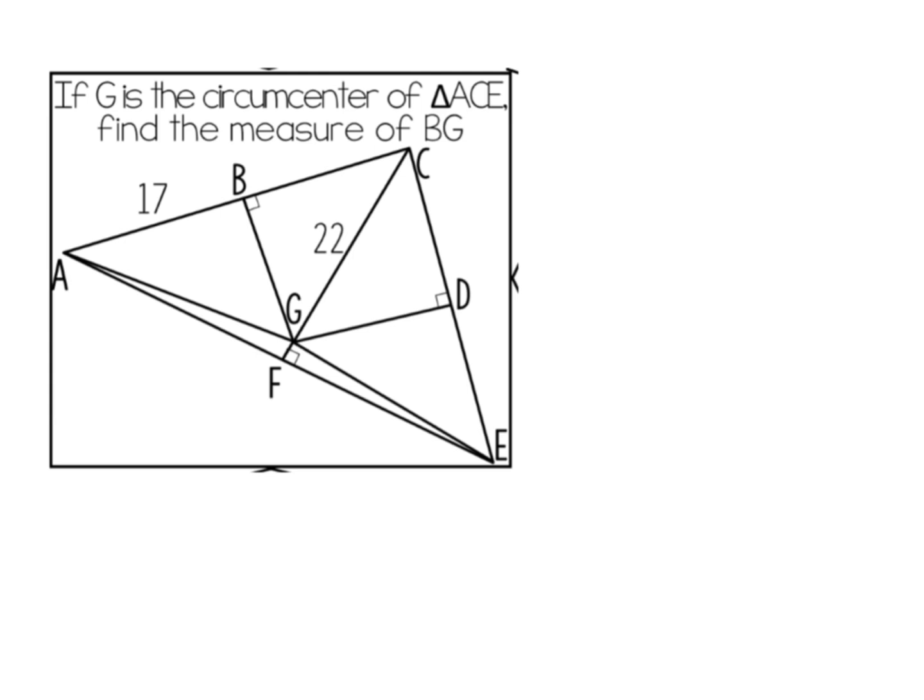Alright, so in this one here it says if G is the circumcenter. Okay, circumcenters - we have perpendicular bisectors and it's equidistant from the vertices. So it's a circumcenter, find the measure of BG.